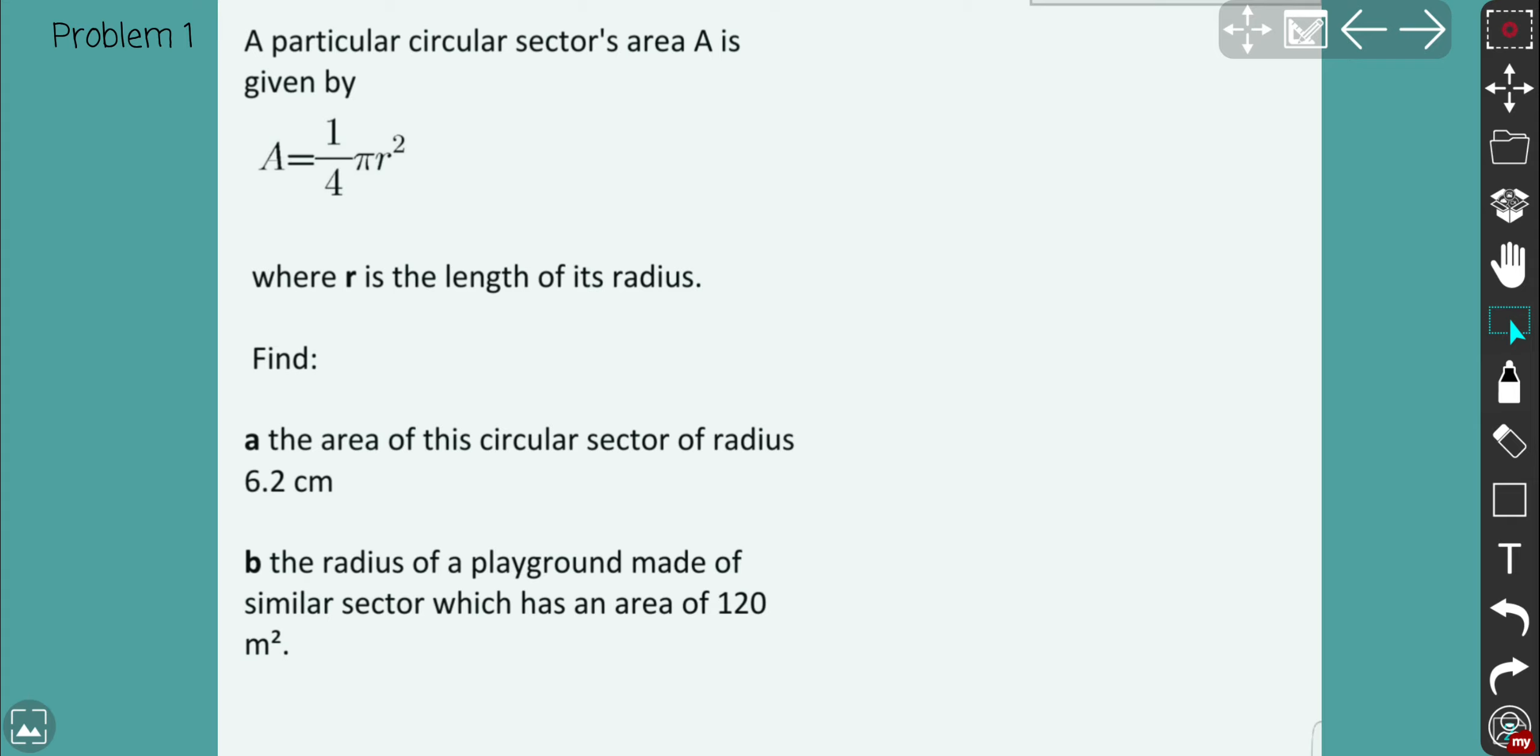All right, so we've got a sector and because you're given a formula 1/4 pi r squared, literally to say if you remember that area of the circle is simply pi r squared. In this case obviously you have a quarter because you have one fourth right of the whole area. So that's why your sector area, sector is simply a quarter of the area of the circle.